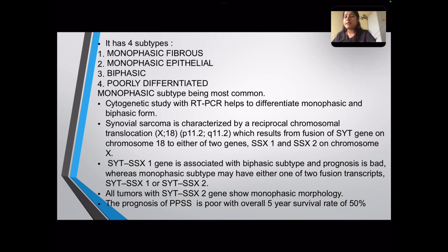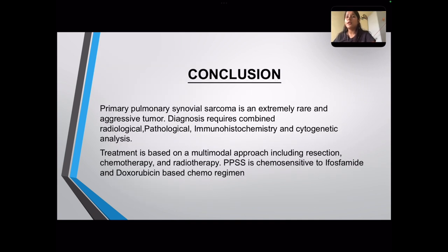The prognosis of PPSS is very poor with an overall 5-year survival rate of only 50%. In conclusion, primary pulmonary synovial sarcoma is an extremely rare and aggressive tumor. Diagnosis requires a combination of radiology, pathology, immunohistochemistry, and cytological analysis. Treatment is a multimodal approach including resection; for very large tumors, chemotherapy and radiotherapy are performed, though the role of radiotherapy is not well established. PPSS is highly chemosensitive to ifosfamide and doxorubicin-based chemoregimens.